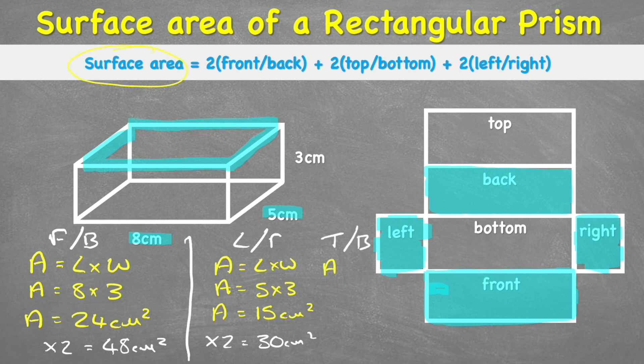I've got area equals length times width. Area equals eight times five. Therefore, area equals 40 centimeters squared. And then to get the opposite one, I've got times two, which equals 80 centimeters squared.